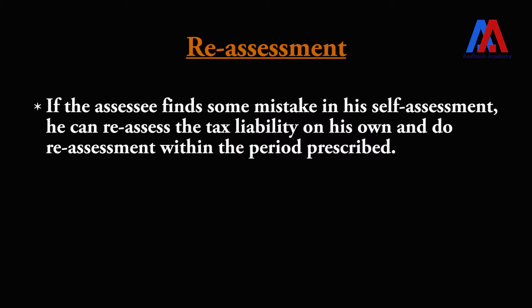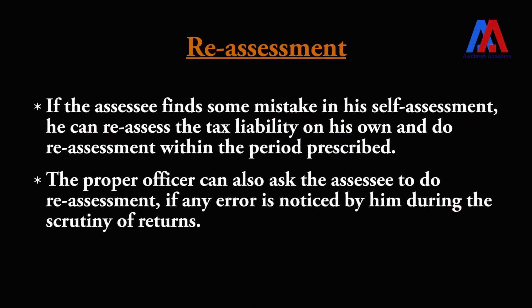If the assessee finds some mistakes in his self-assessment, he can reassess the tax liability on his own and do reassessment within the prescribed period. For example, suppose you have submitted the returns and paid the tax liability, but later found that some mistake has occurred — in that situation you can reassess the return, reassess the tax liability, and pay the difference to the government. Sometimes the proper officer, while doing scrutiny of the return, finds a mistake and points it out; then the assessee reassesses and makes the payment. This is called reassessment.